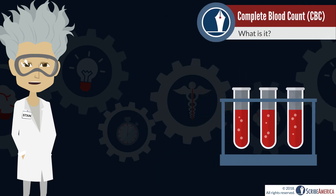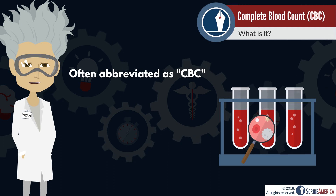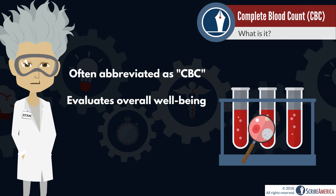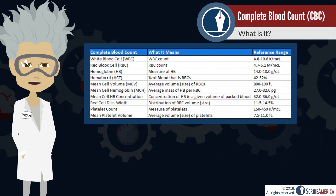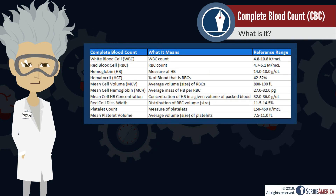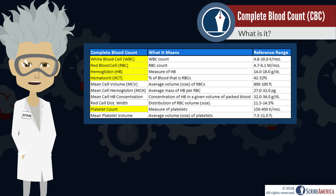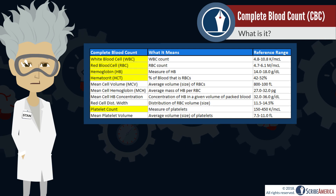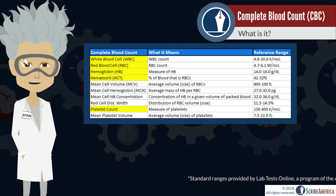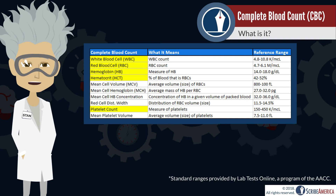A complete blood count, often abbreviated as CBC, is a blood test used to evaluate your overall well-being, and it's capable of detecting a wide range of disorders. The five major components of the blood measured in a CBC are the white blood cell count, red blood cell count, hemoglobin, hematocrit, and platelet count. These are highlighted in yellow. The remaining items are related to one of the highlighted components — for example, mean cell volume tells you more about the patient's red blood cells. Please keep in mind that standard ranges can vary depending on your source. These ranges and definitions were provided by Lab Tests Online, a program of the American Association for Clinical Chemistry.